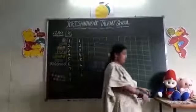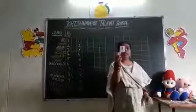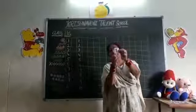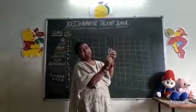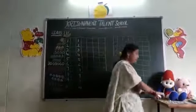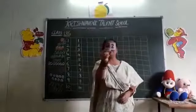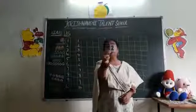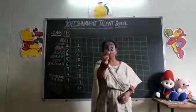So today we will see the numbers with pictures. See, this is which number? 1. Which number is this? 1. What is the spelling of 1? O-N-E. 1. See, this number is 2. Which number is this? 2. What is the spelling? T-W-O. 2.